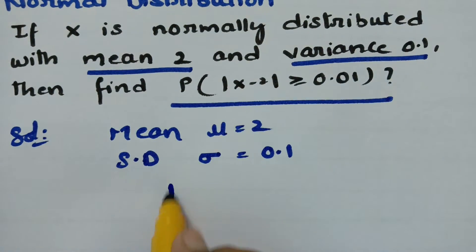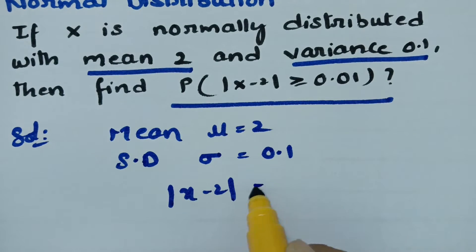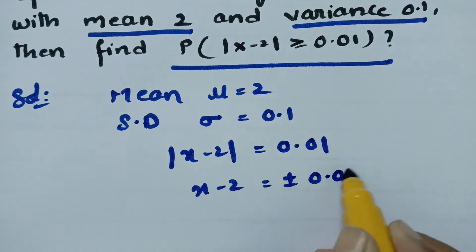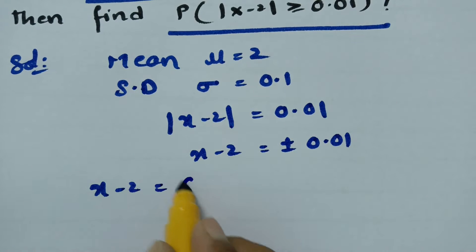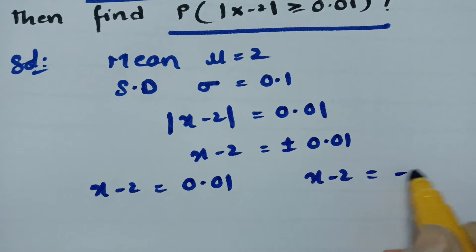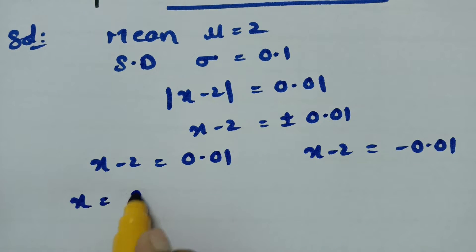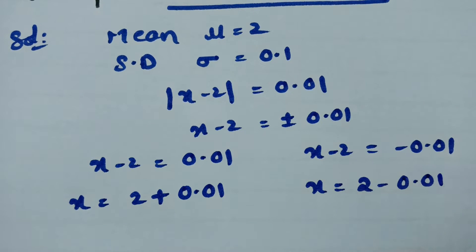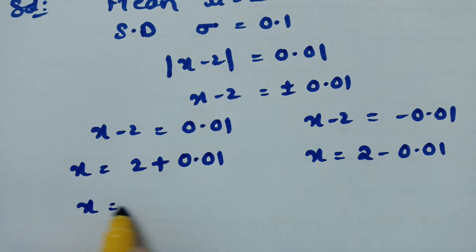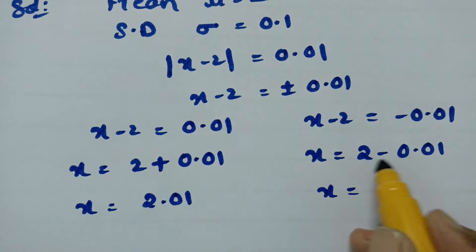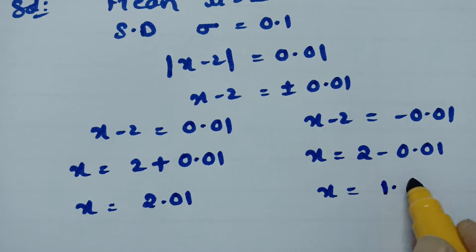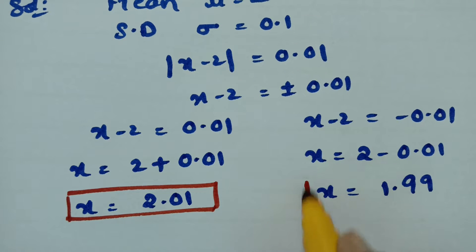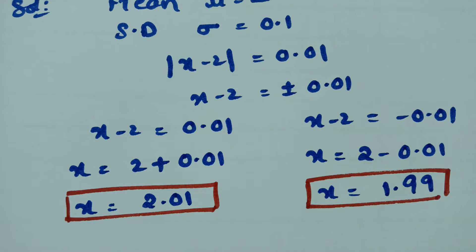We have to find out modulus of x minus 2 equal to 0.01. If we take this modulus, it becomes plus or minus 0.01 — one time positive and the next time negative. So the x values are 2 plus 0.01 and 2 minus 0.01, which are 2.01 and 1.99 respectively.